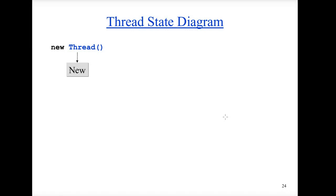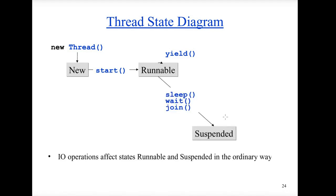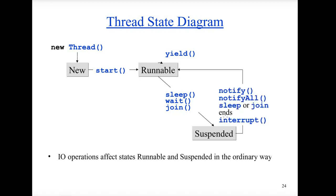Here we can see the state diagram of a thread and its life cycle. When you create a new thread and call start, it goes to the runnable state. Even when you call yield, the thread is still in runnable mode but just not receiving a CPU clock — it's in the queue to receive one. When you call sleep, wait, or join, the thread goes to suspended mode. It comes back to runnable by being notified, finishing the sleep time, the join ending, or calling interrupt. A thread becomes dead when it returns from the run method.